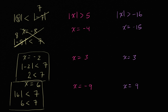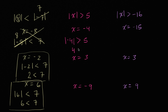Now let's do this one here in this magenta color. I encourage you to pause the video and try to work through it on your own. Let's try x equals negative 4. If x equals negative 4, we're going to say the absolute value of negative 4 needs to be greater than 5. The absolute value of negative 4 is just going to be 4. Is 4 greater than 5? No, 4 is less than 5. So that doesn't work.